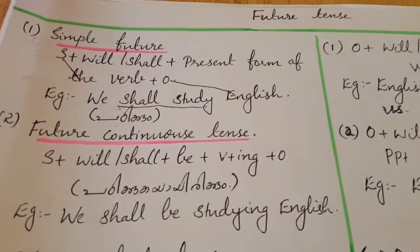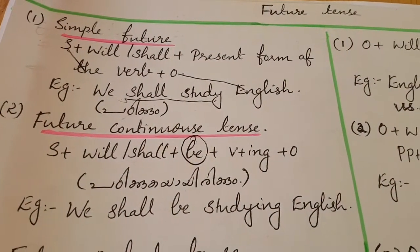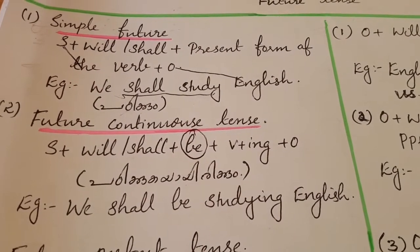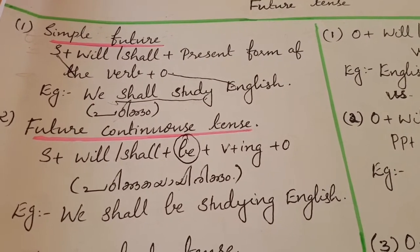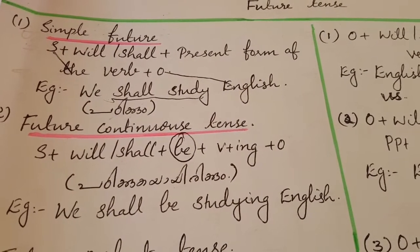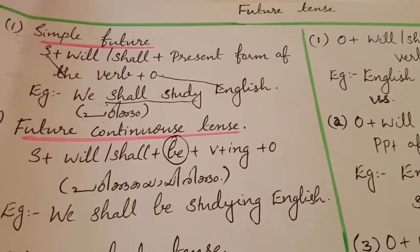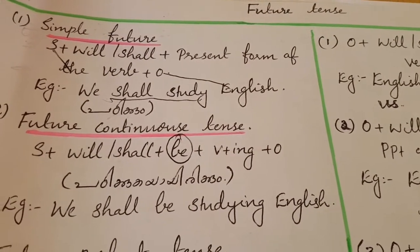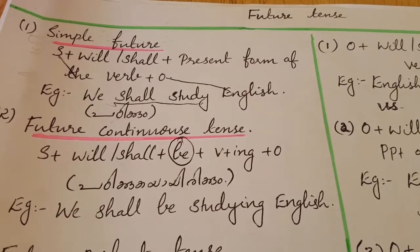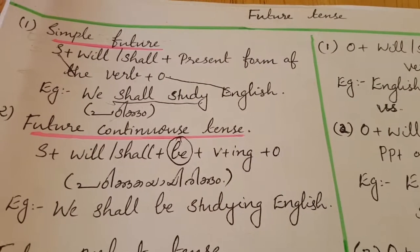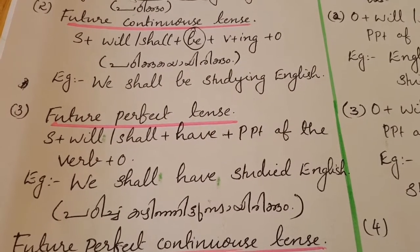Next one: future continuous tense. Now, for the future perfect tense, the formula is subject plus will or shall plus have plus past participle of the verb plus object.